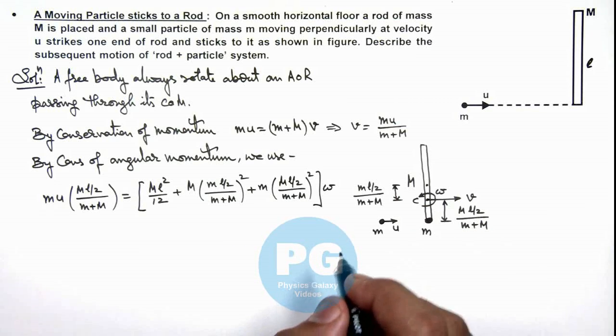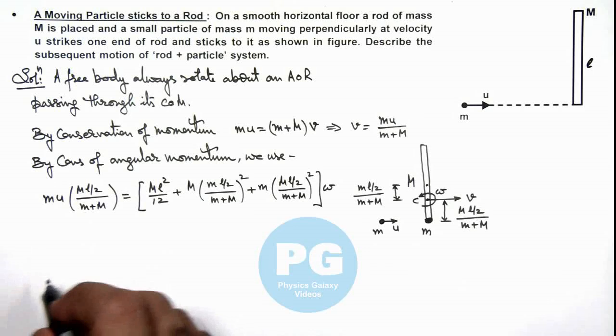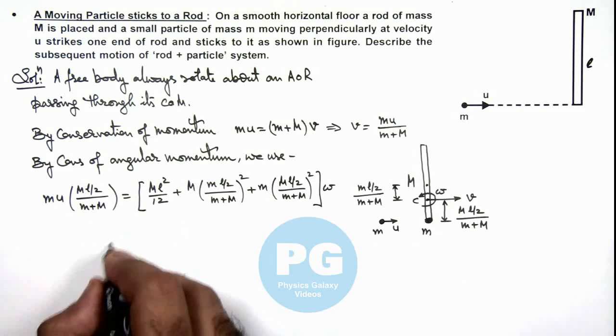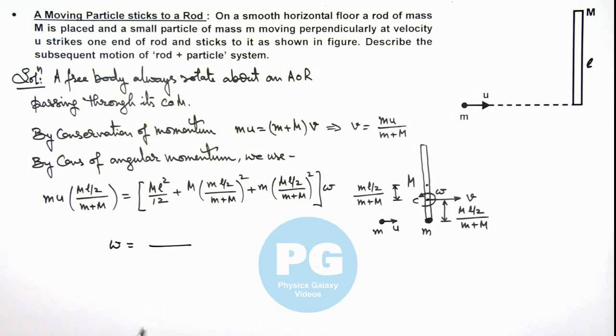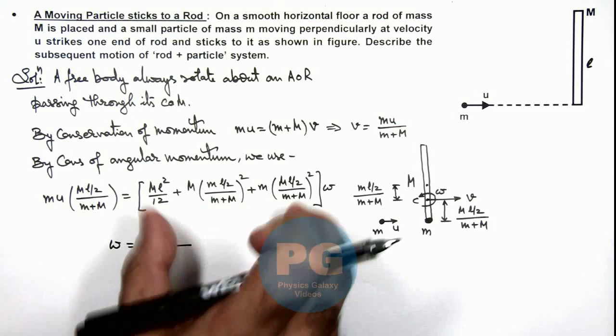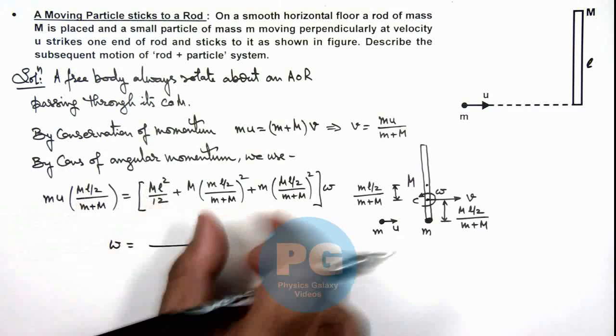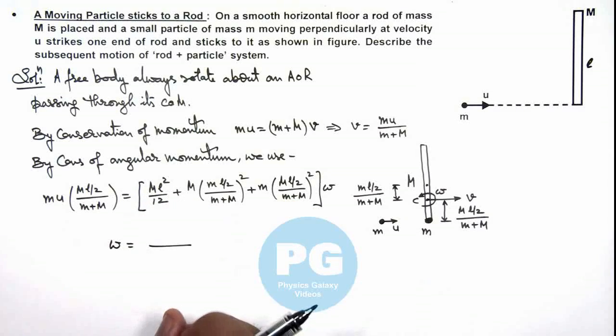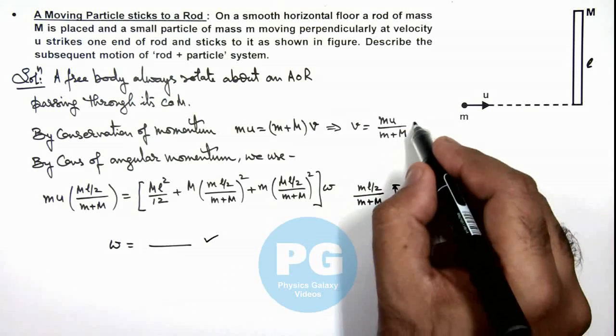So in this situation we can simplify this relation and calculate the value of omega. I am leaving this omega as an exercise for you to evaluate, which we will directly get by dividing the left-hand side by this denominator. So once we have got the value of omega and we have got the value of v.